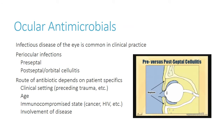Starting with ocular antimicrobials — infectious disease of the eye is very common in clinical practice. A lot of people come in complaining of conjunctivitis. You can have several varieties of periocular infections: preseptal, postseptal. Depending on how diffuse the disease is and the location, it can lead you to choosing different types of antibiotics — for instance, looking at severity, patient age, and immune status.